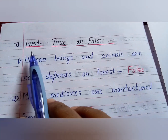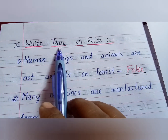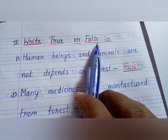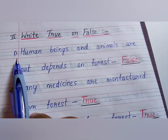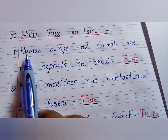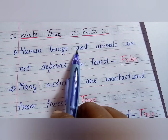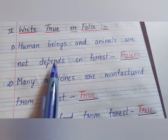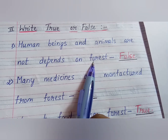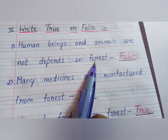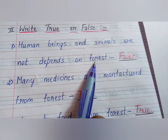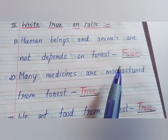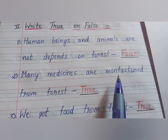Next section is true or false. First question: human beings and animals do not depend on forests. Is it right, children? No, it is false. We are depending on the forest, isn't it?